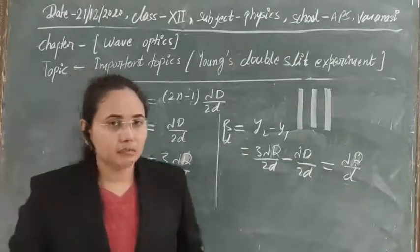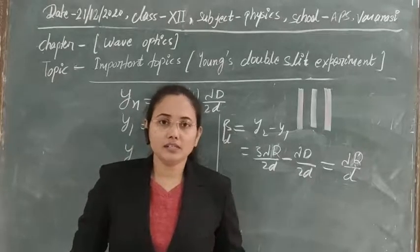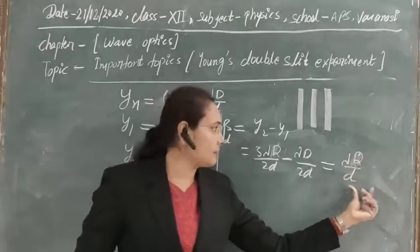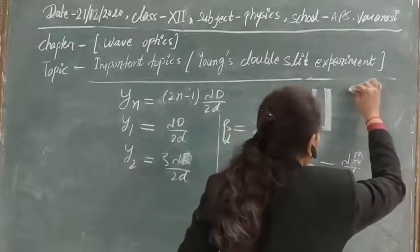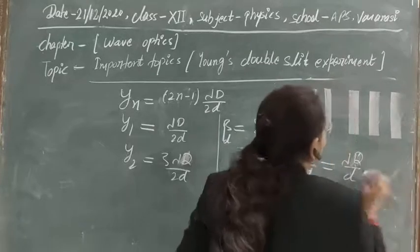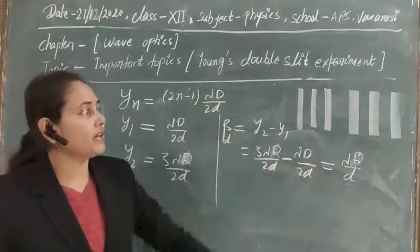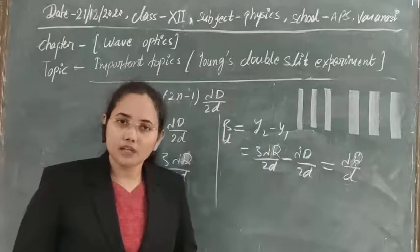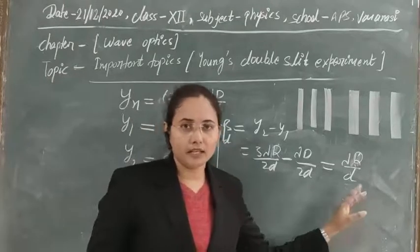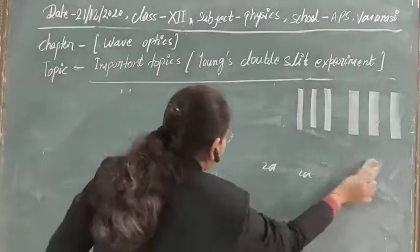This means that in the interference pattern of Young's double slit experiment, all fringes are equally spaced — whether dark or bright fringes — and the fringe width is λD/d. If you draw these fringes, the spacing will be equal throughout. The fringe width can be calculated by substituting the values of λ, capital D, and small d.